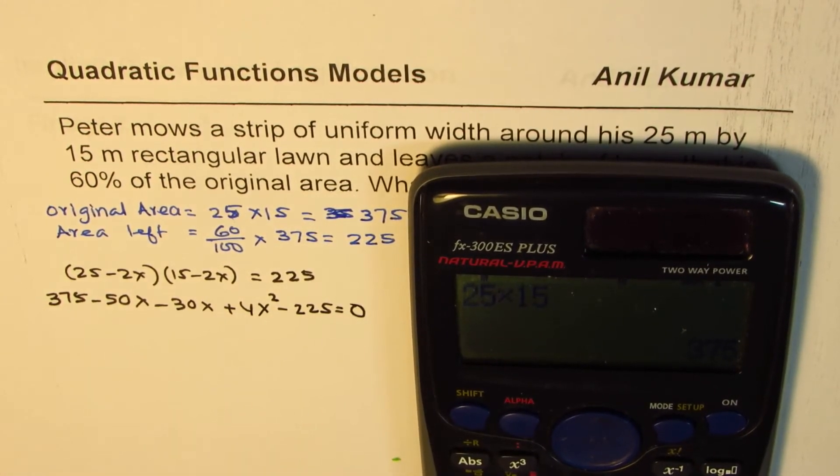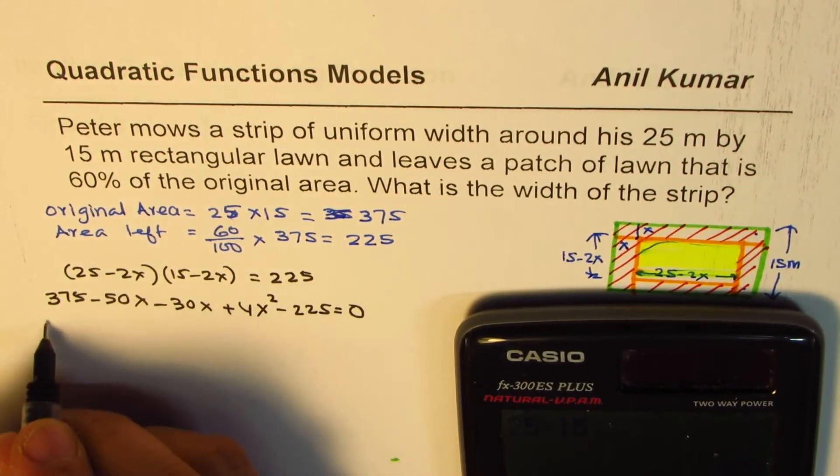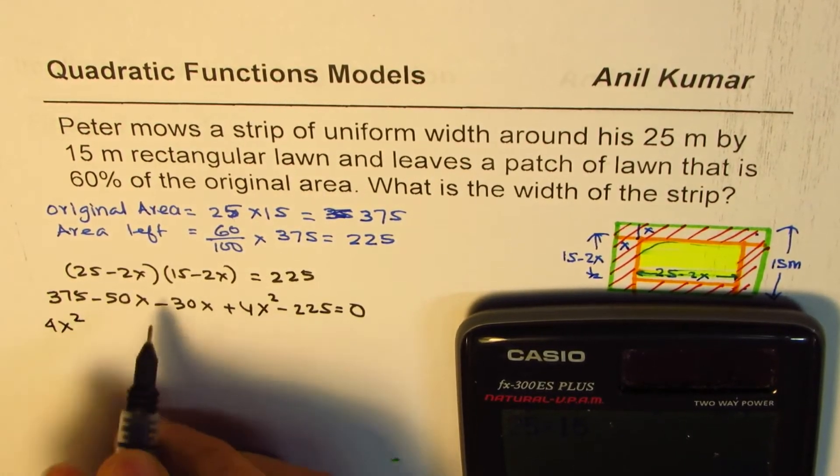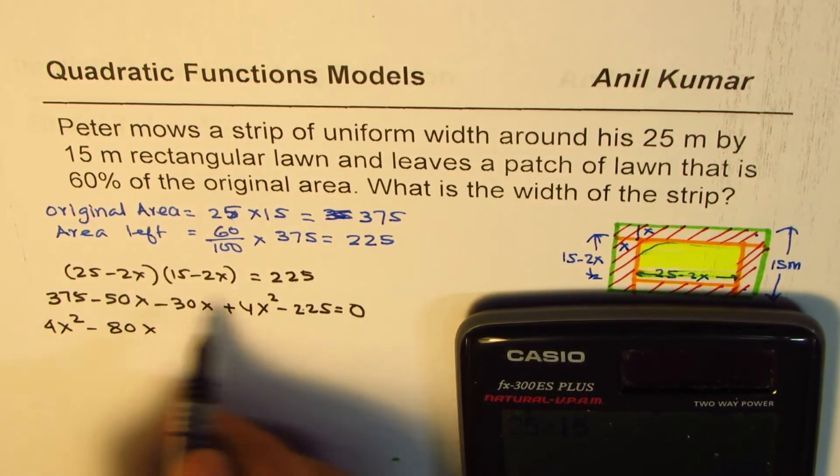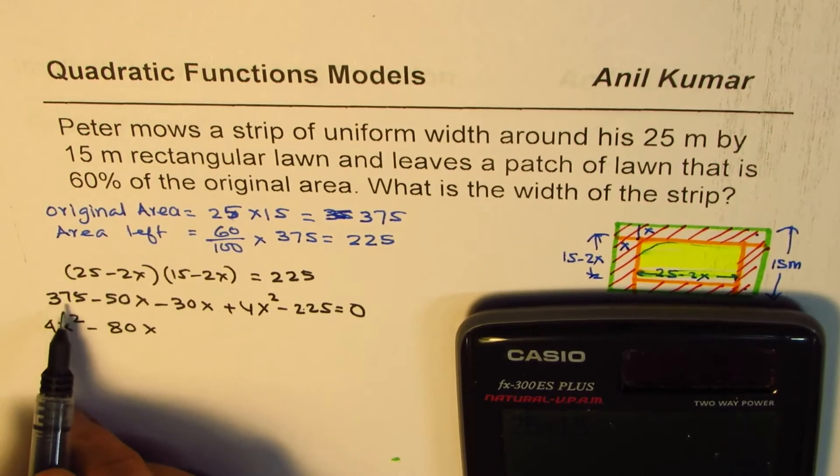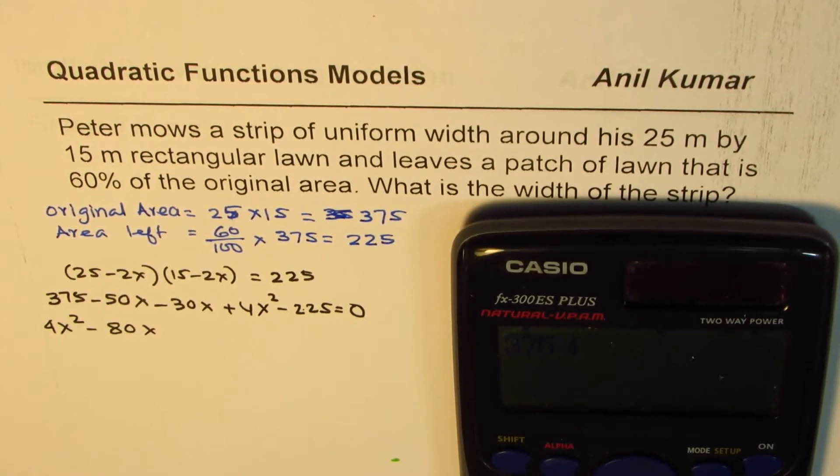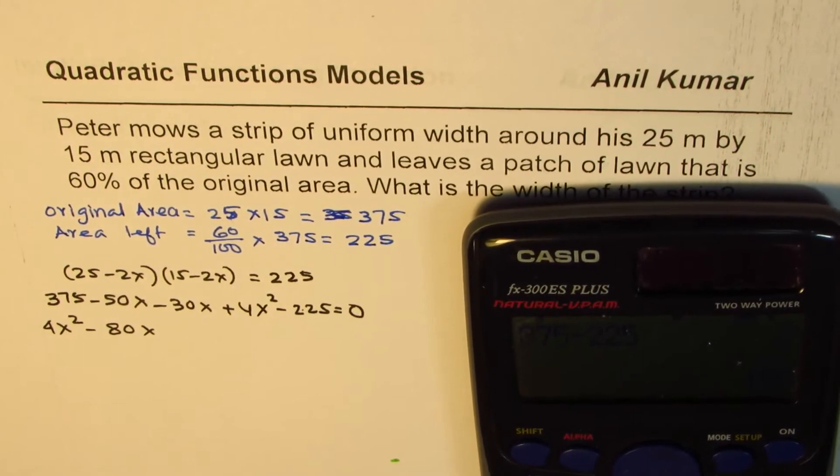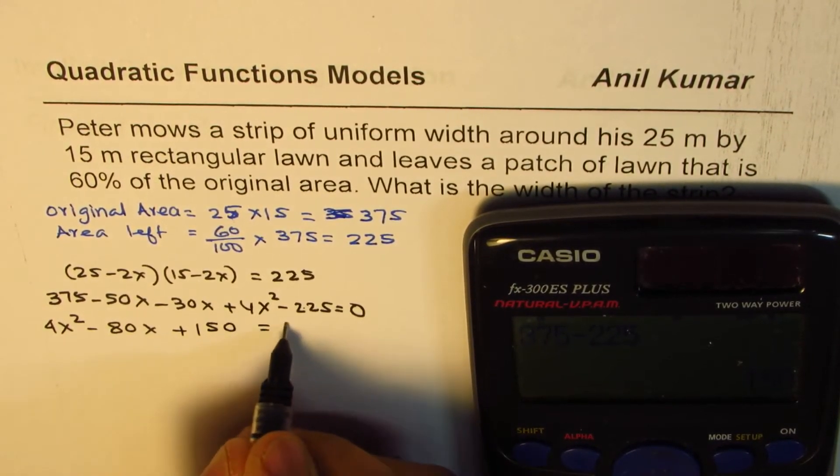Now we'll rewrite this equation. We have 4x² - combine these two - minus 80x, and combine these two: 375 take away 225 equals 150. So 4x² - 80x + 150 = 0.